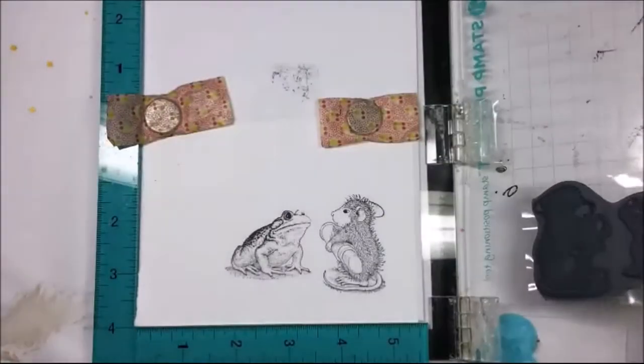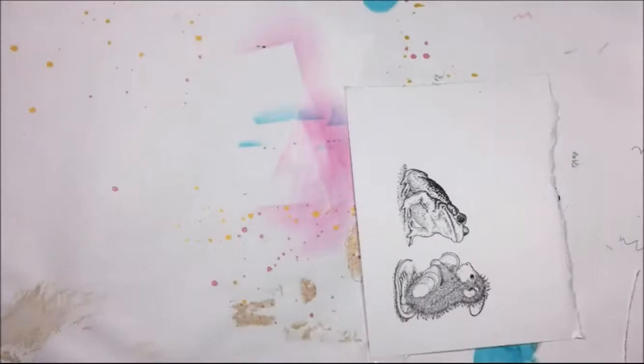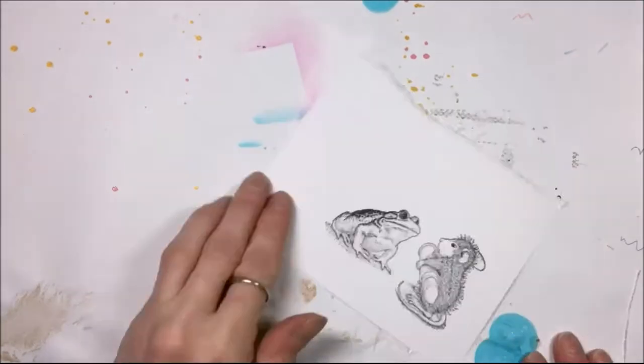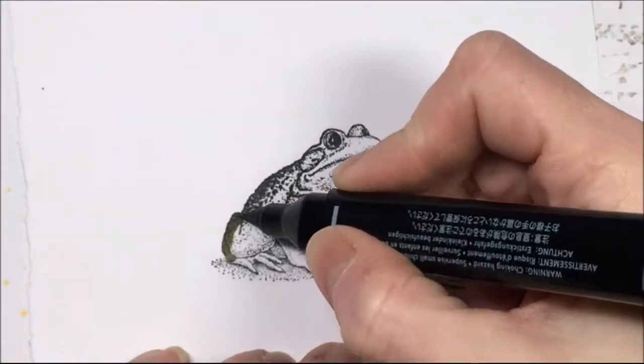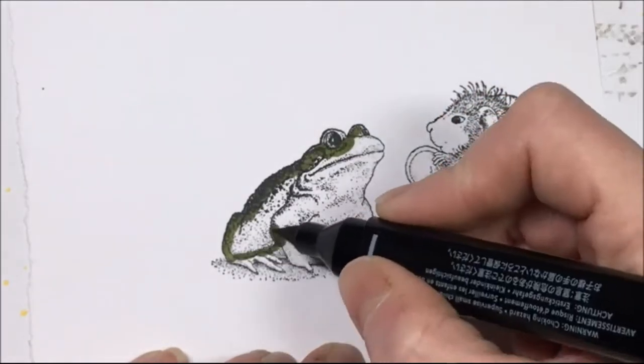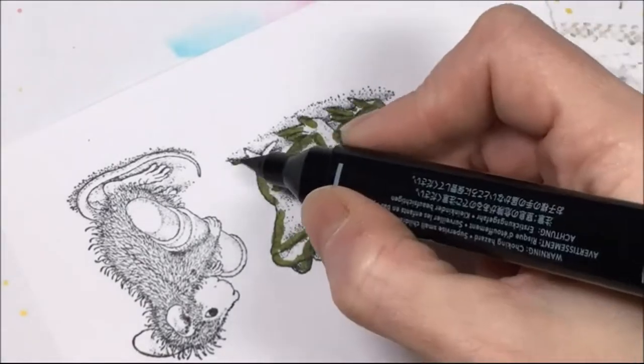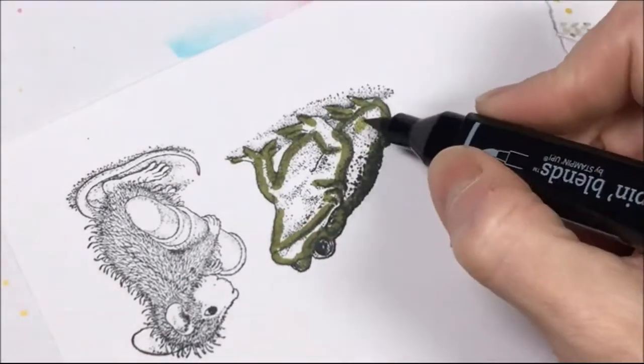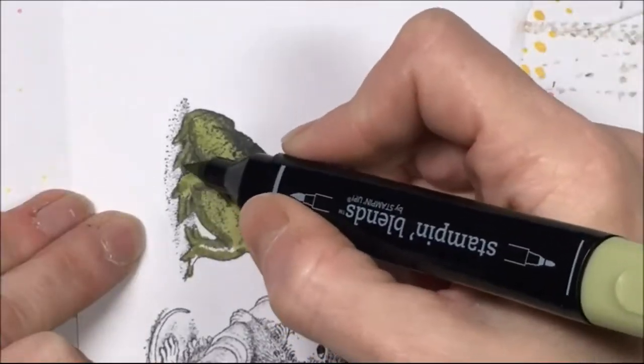I love this stamp. That's Memento Tuxedo Black ink and I stamp it a couple of times to get a nice dark impression. Then I'm just going to use some alcohol markers to color that toad and that mouse. I am using Georgia Pacific cardstock because when you alcohol marker color, the cardstock makes all the difference.